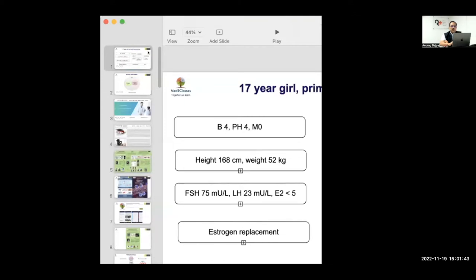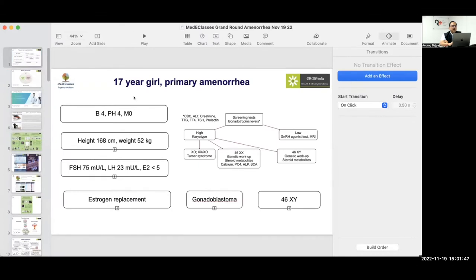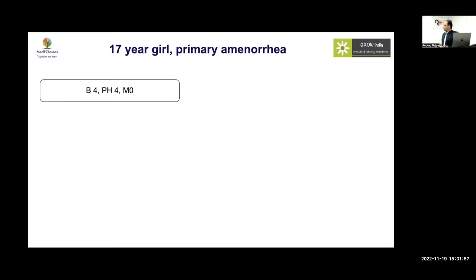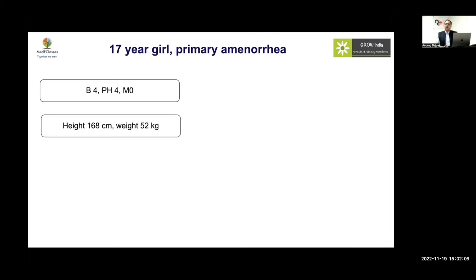This is a 17-year-old girl with primary amenorrhea who presented with stage four breast development and stage four pubic hair development, but no menstrual cycle. There was normal development otherwise, but no periods. She was a tall girl.